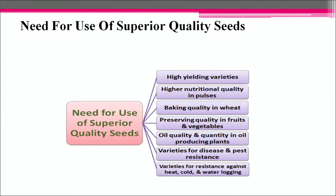Superior quality seeds have characteristics including high yielding varieties, higher nutritional quality in pulses, baking quality in wheat, preserving quality in fruits and vegetables, oil quality and quantity in oil-producing plants, varieties for disease and pest resistance, and varieties resistant against heat, cold and waterlogging.